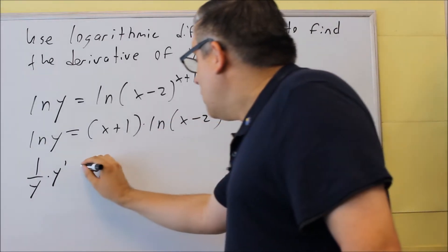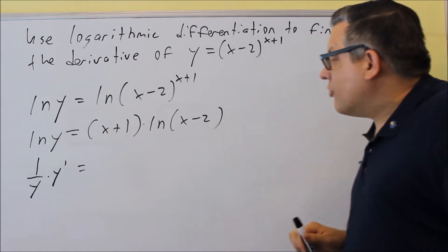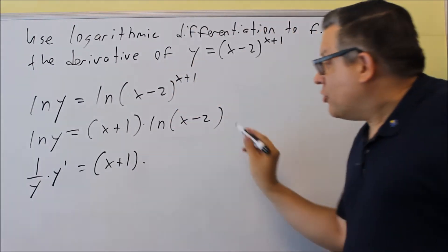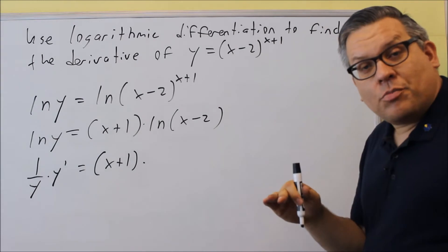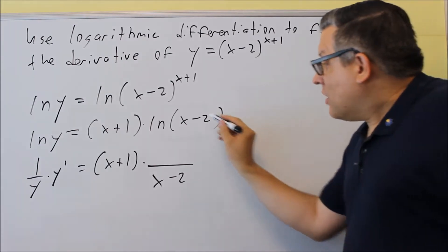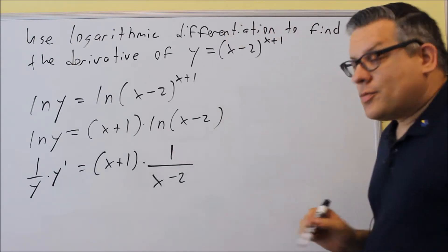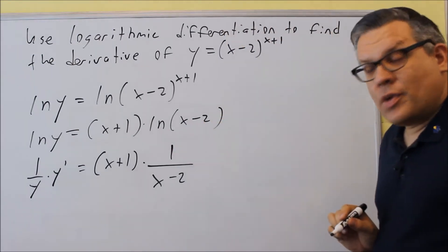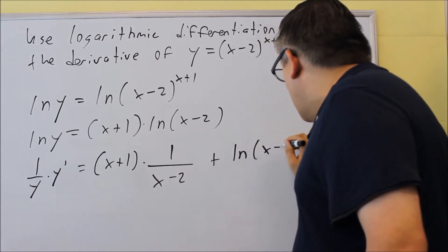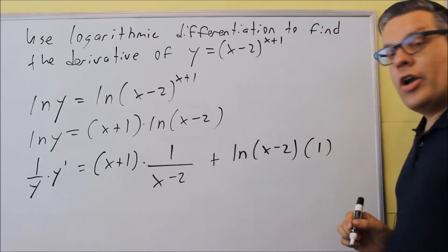On the right-hand side we have two different things, so this is going to involve a product rule. The product rule says we take the first thing times the derivative of the second. For the derivative of the second, we use the U-prime over U formula — the original U goes on the bottom, and the derivative of X minus 2, which is 1, goes on top.